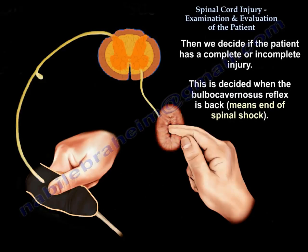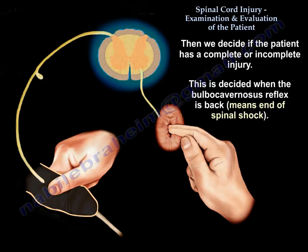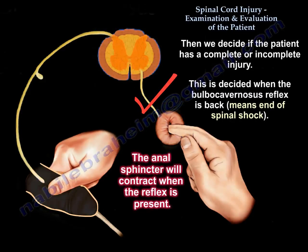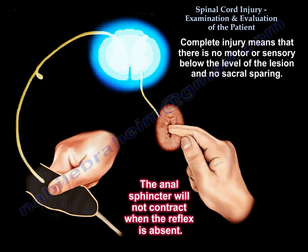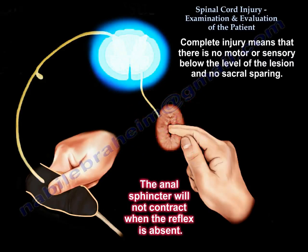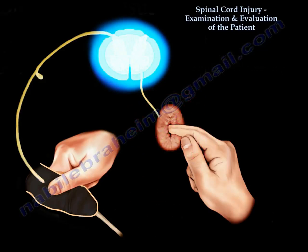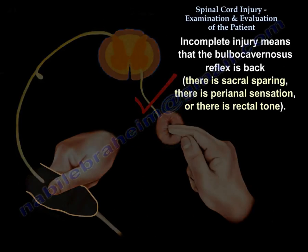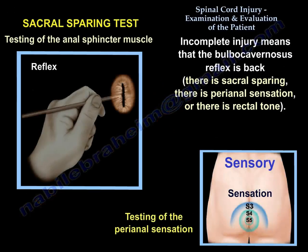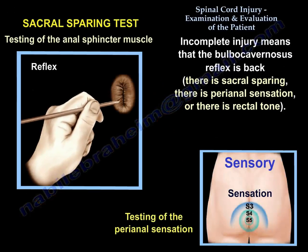Then we decide if the patient is complete or incomplete. You decide that when the bulbocavernosus reflex is back — that marks the end of spinal shock. Complete means no motor or sensory below the level of the lesion and no sacral sparing. Incomplete means the bulbocavernosus reflex is back and there is sacral sparing — perianal sensation or rectal tone.